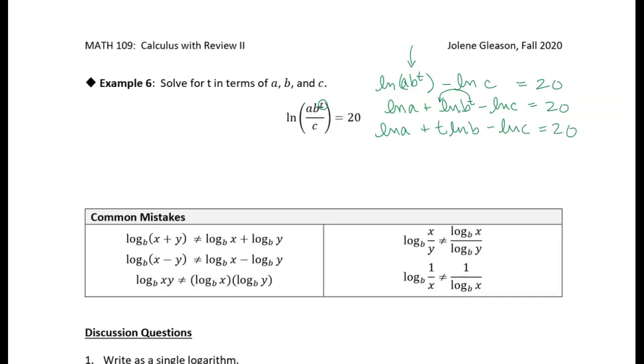All right, from here it's all just algebra. We just need to isolate t. So I am going to isolate this t natural log of b. I'm going to subtract the natural log of a and add the natural log of c to both sides, which will give me 20 minus the natural log of a plus the natural log of c.